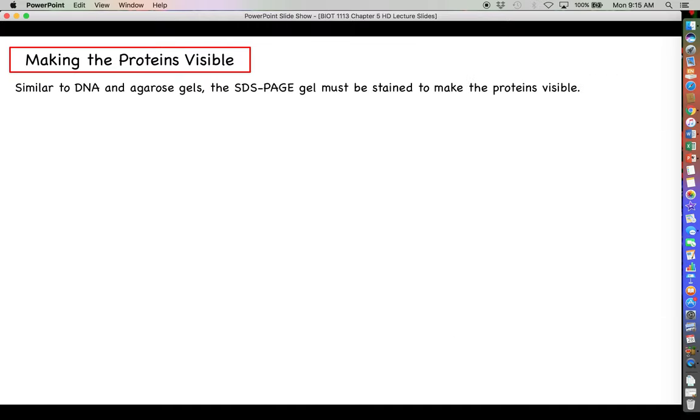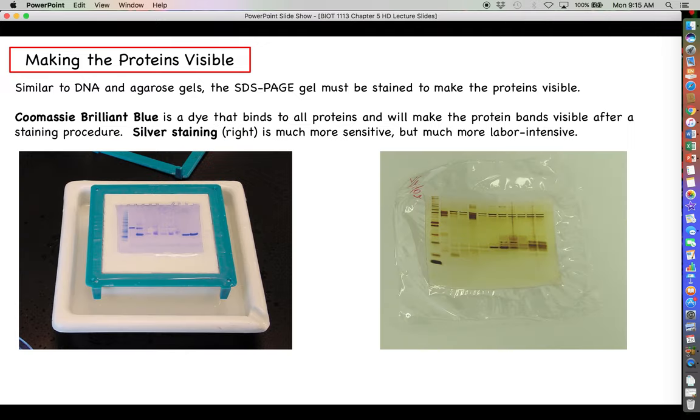And then finally, another major similarity between DNA and protein gels is that you have to stain the gel in order to make the molecules visible. We had to stain an agarose gel with something like ethidium bromide in order to visualize the DNA bands. Similarly, the SDS-PAGE gel has to be stained in order to make the proteins visible. There are two common ways that you can do this. On the left, you can see a gel after it has been run out that has been stained with a dye called Coomassie Brilliant Blue. Coomassie is a blue dye that binds to all proteins, and it causes the protein bands to become visible after a staining and destaining procedure.